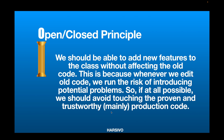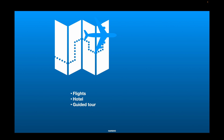This principle says you shouldn't be touching code which is already working, which is trustworthy and proven in production. If you have to add more functionality to your class, you should add it in such a way that it does not affect your existing functionality. According to this principle, we should be able to add new features to the class without affecting the old code, because whenever we edit old code we run the risk of introducing potential problems.